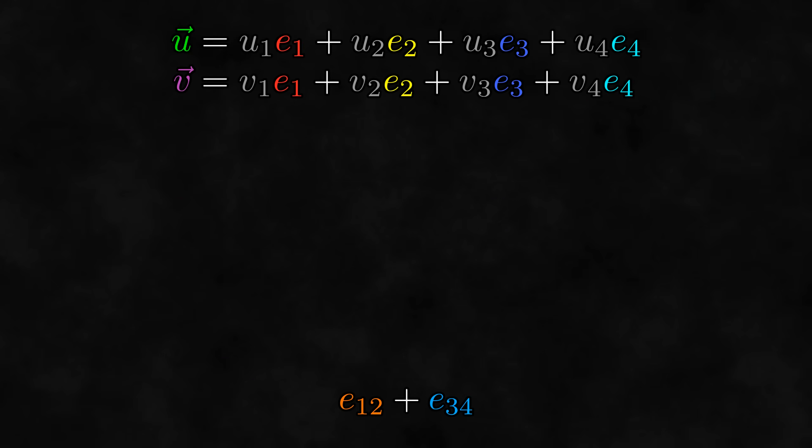So we initially were trying to find two four-dimensional vectors that span the plane given by the bivector E12 plus E34, but now we are just looking at two three-dimensional vectors spanning E12. Again, the other components are still there, but they won't affect our arguments in this subspace because of linear independence.